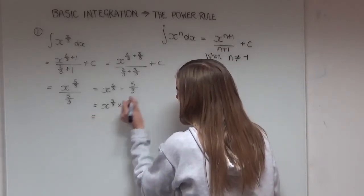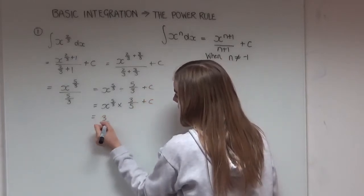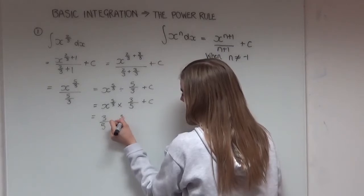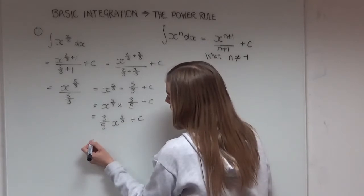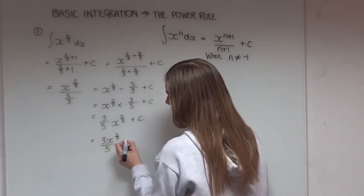So our final answer is 3 fifths x to the power of 5 over 3 plus c. Or you can rewrite this as 3x to the power of 5 over 3 all over 5 plus c.